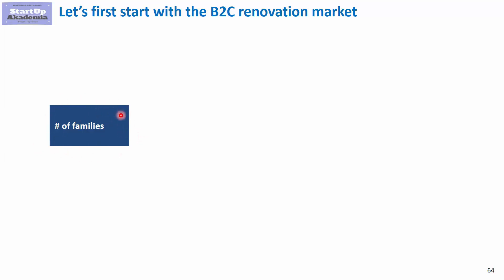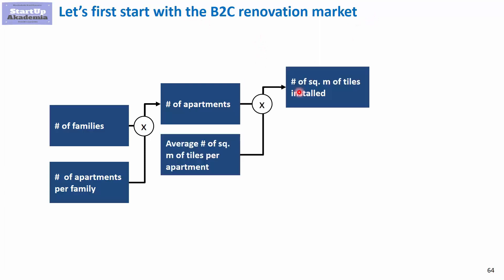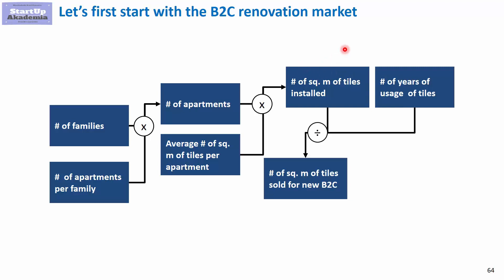We assume a number of apartments per family to get the total number of apartments. Then, to get to ceramic tiles, we assume an average number of square meters of tiles per apartment. This gives us the ceramic tiles installed — that's ownership, not sales. By also assuming the number of years tiles are used, we can calculate annual sales for the B2C renovation market.